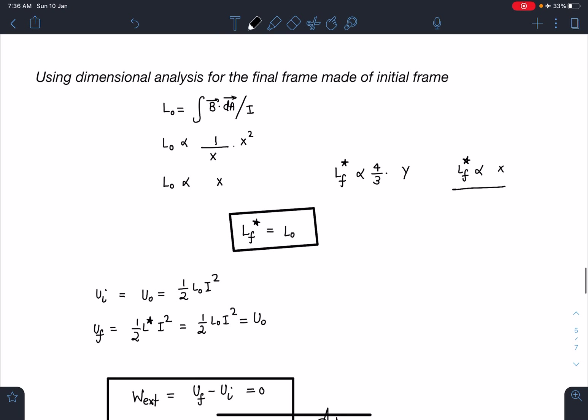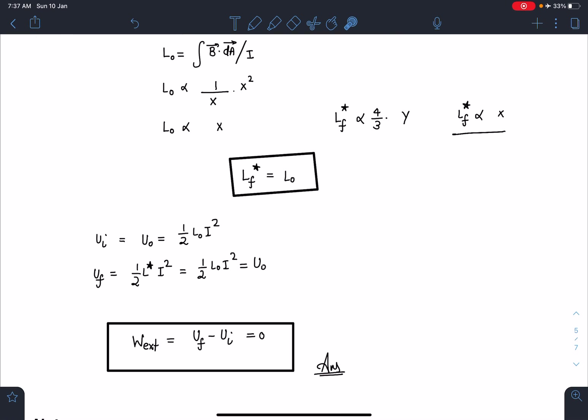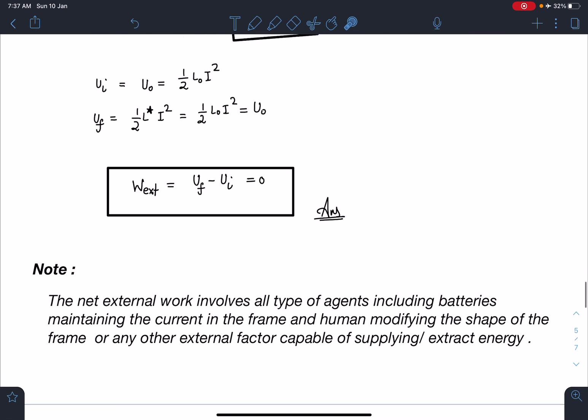U_initial is known to us. U_final is known to us. Both are going to be same. Very interesting, very amazing answer is coming. The net work done by external forces or external agents is going to be 0. U_final - U_initial is going to be 0. This is going to be the final answer for this problem. There is a note here which you need to see.